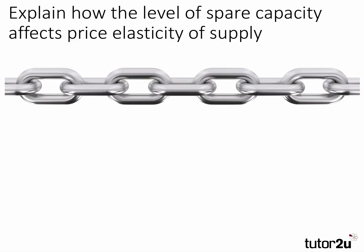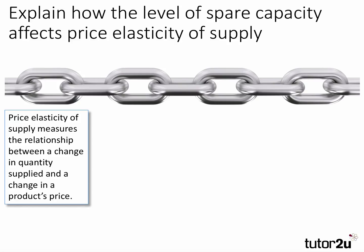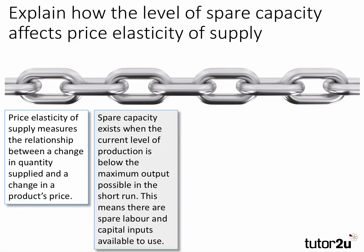It's always a good idea to define a key term. Price elasticity of supply measures the relationship between a change in quantity supplied and a change in the product's own price. Spare capacity is when a business's current level of production is below the maximum output possible in the short run — meaning there is some spare labour, land, and capital inputs available to use.